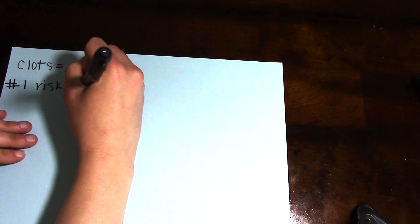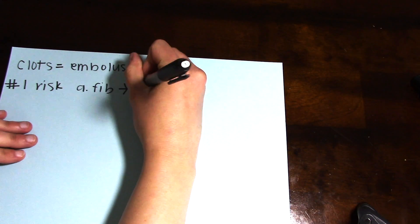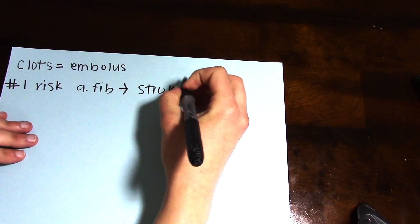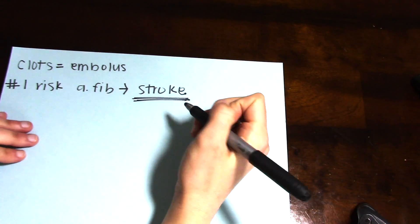The number one risk or complication of AFib is stroke, because those clots go right from the heart straight up to the brain and can get lodged in the brain and cause a stroke.